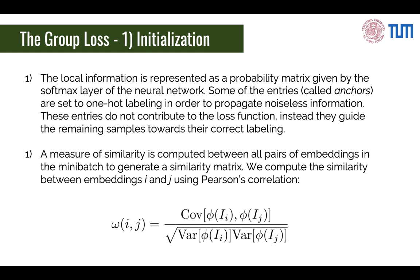In order to propagate some noiseless information, we set some of these predictions to one-hot labeling that we get from the ground truth. These images, which we call anchors, guide the remaining images towards a correct labeling. For the similarity matrix, we compute the Pearson's correlation between all the pairs of embeddings present in the mini-batch.